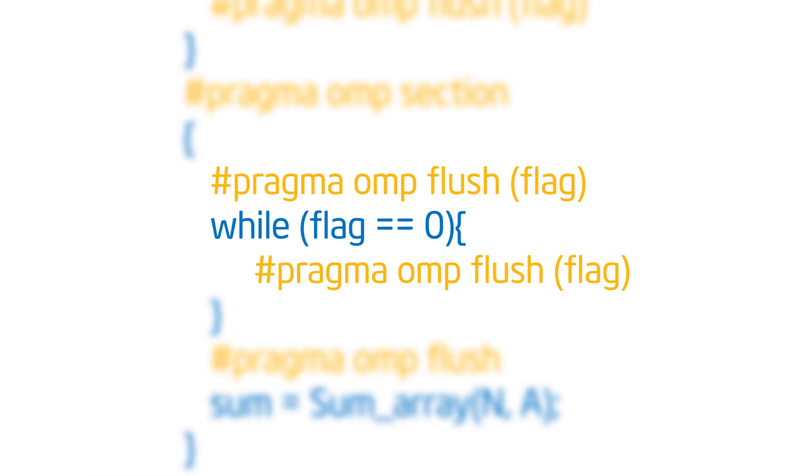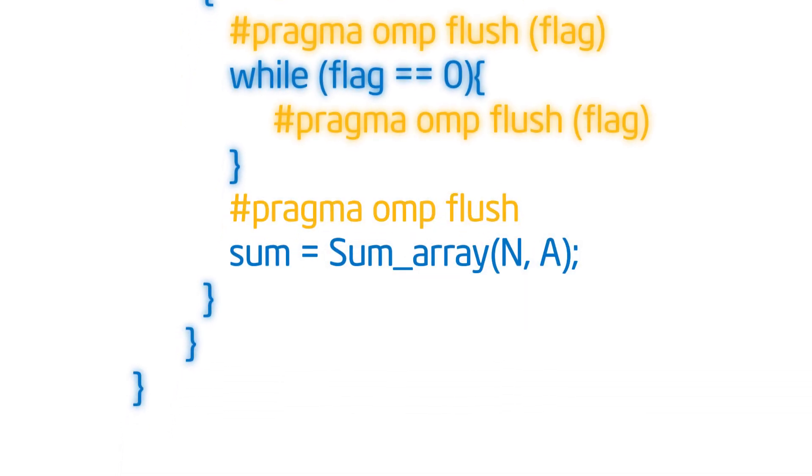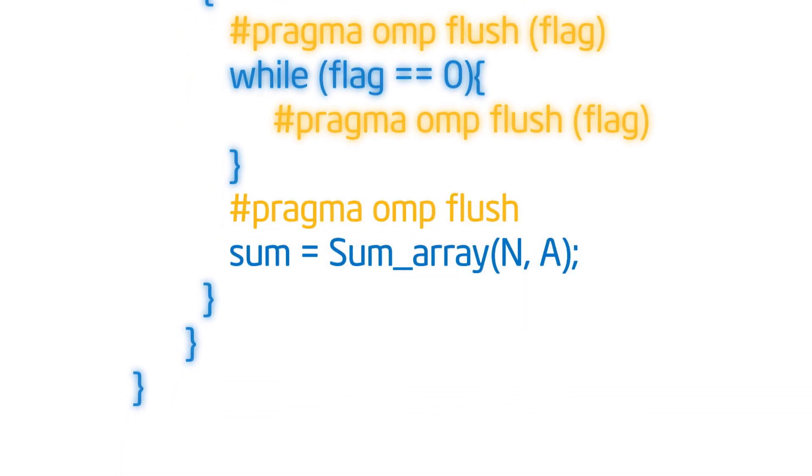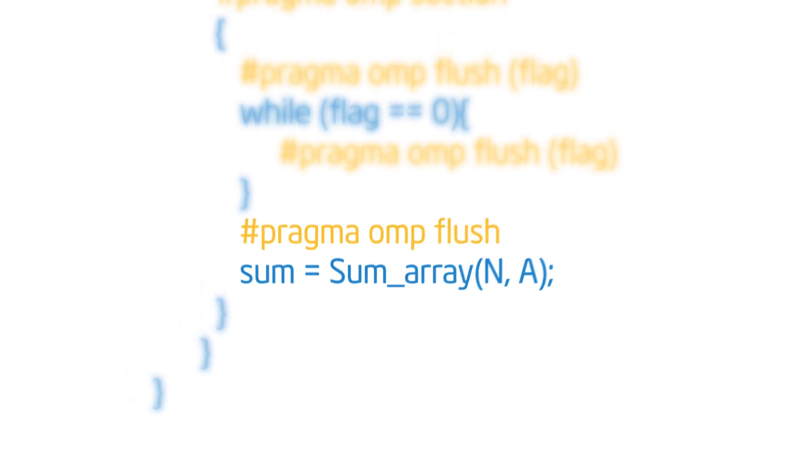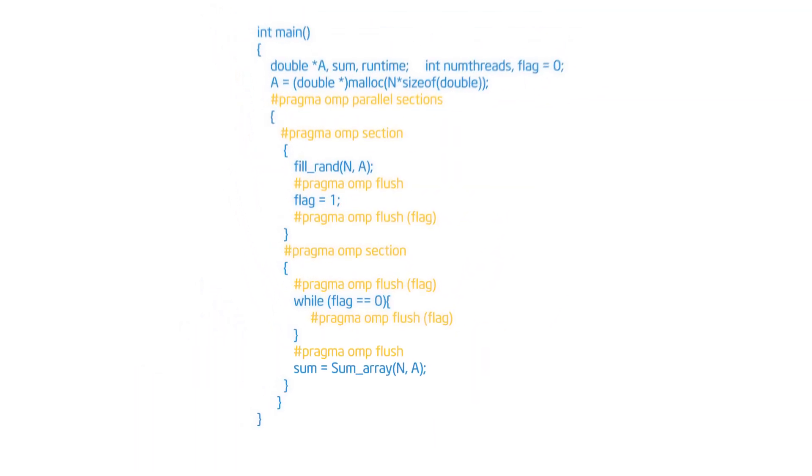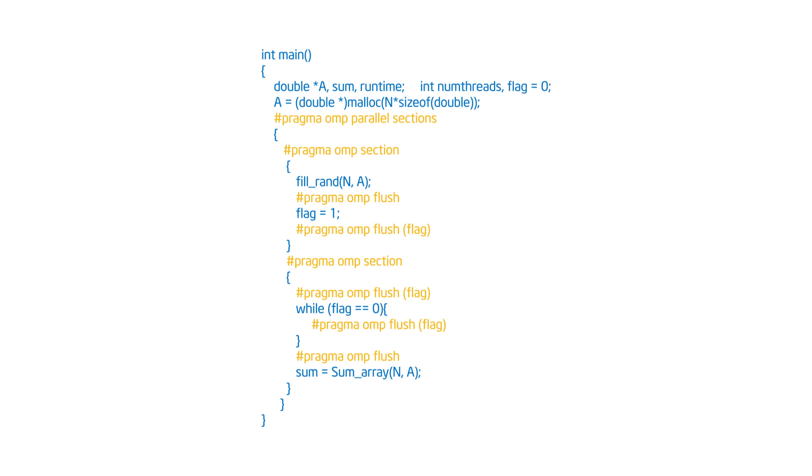So after the loop, when it's seen the value of flag change, I have to do one more flush, but now it's a flush without a list. So I'll flush everything and pick up flag. And now I can do my consumption of that array A. Are you with me? I'm going to give you a couple of seconds to look at this and think about it.